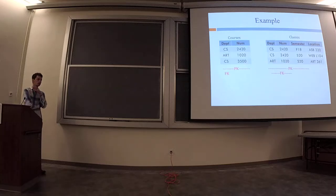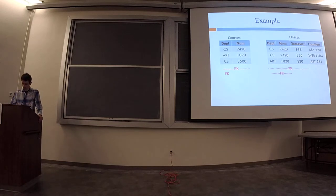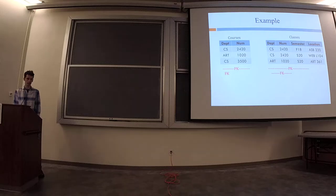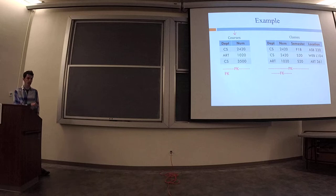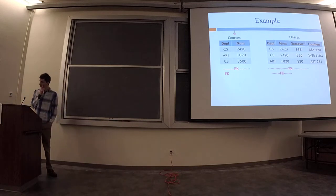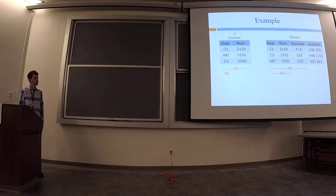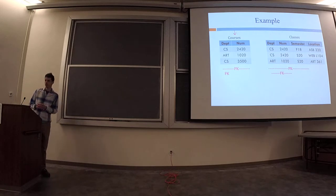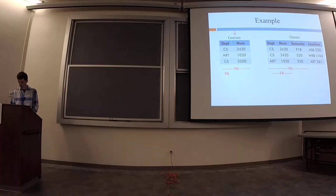A more concrete example coming directly from the OMS. We'll start with the first weak entity set — the strong entity is departments. The key for this first one is department combined with number. A department comes from a different table, which is why it's marked as a foreign key. The combination of those two identifies a course.